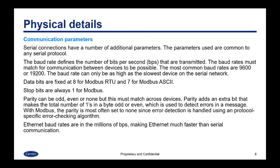Data bits are fixed at 8 for Modbus RTU and 7 for Modbus ASCII. Stop bits are always 1 for Modbus. Parity can be odd, even, or none, but must also match across devices. Parity adds an extra bit that makes the total number of ones in a byte stream odd or even, which is used to detect errors in a message. With Modbus, parity is most often set to none since error detection is handled using a protocol-specific error checking algorithm.